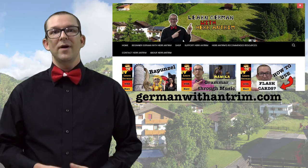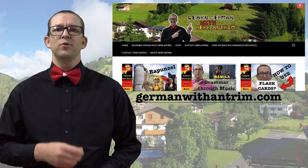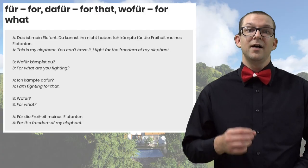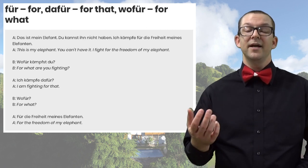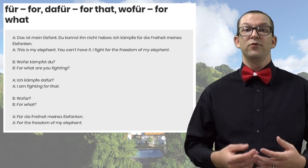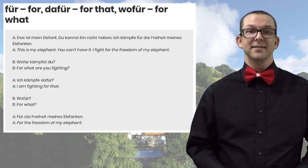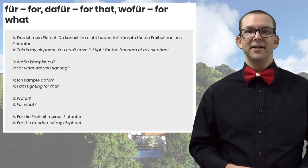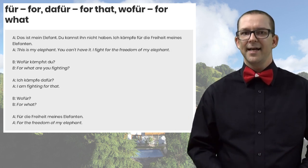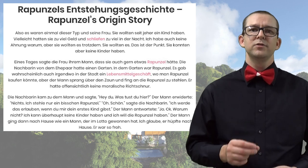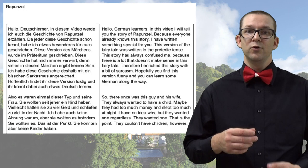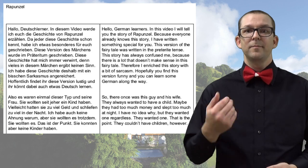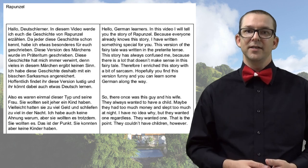Let's start with the free ones. I have a website, Germanwithantrum.com. Every time I upload a video, a version of the script gets posted there as a blog post. This is helpful for grammar lessons as the example sentences are written out and you don't have to worry about pausing the video or anything like that. With stories, I only post the German version of the story, so if you want the German and English side by side, you'll need one of the paid options that I'll get to here in a bit.